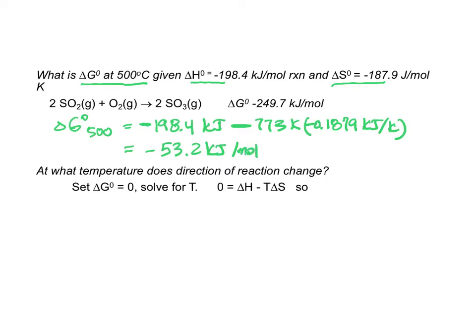So notice I have different values for delta G. When I am at 500 degrees centigrade it has a value of minus 53. When I am at 25 degrees centigrade I have a value of minus 249. If you look back at the first slide we said spontaneity will change at a certain temperature.